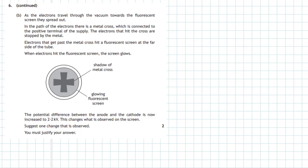The electrons that get past the metal cross hit the fluorescent screen at the far side of the tube. When the electrons hit the fluorescent screen the screen glows. You can see the shadow of the metal cross and the glowing fluorescent screen around it.